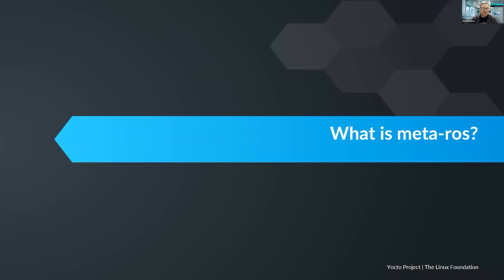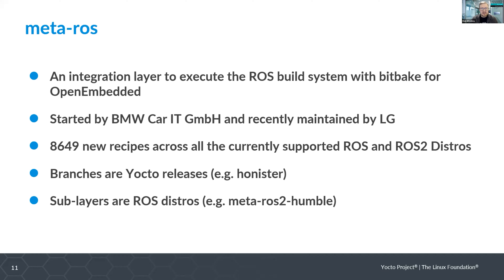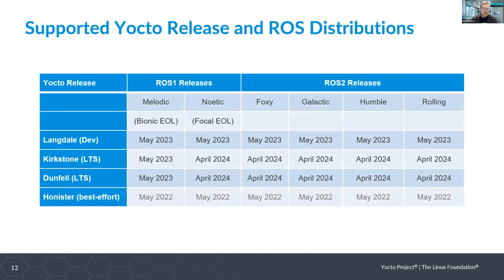Now let's talk about the meta-ROS layer. This is an integration layer created so that you can execute the existing ROS build system with BitBake for OpenEmbedded. It was started many years ago by BMW and recently maintained by LG. There are quite a number of recipes provided — for a single Yocto release there are 8,649 new recipes when you include all the recipe files for all the various ROS and ROS 2 distros. The branches in meta-ROS are all Yocto releases such as Honister, with sub-layers named after ROS distros such as meta-ROS 2 Humble. This makes it quite a challenge given all the different combinations possible.